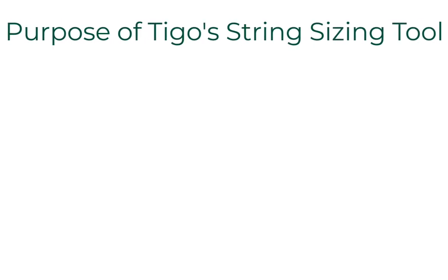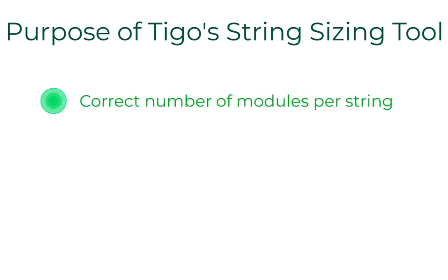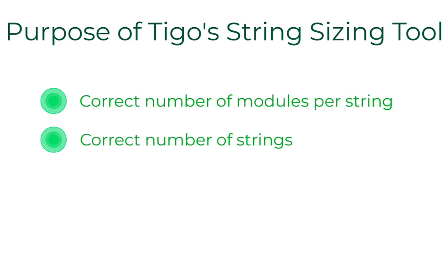Please allow me to interrupt Greg for just a minute with some important amplifying information about Tygo's string sizing tool. There are four main checkpoints for the string sizing tool. First, it ensures the correct number of modules in each string. This equates to a specific open circuit voltage that I will elaborate on shortly. Next, it ensures the correct number of strings for the inverter. The tool shows specific stringing information for all three of the Tygo EI inverters.